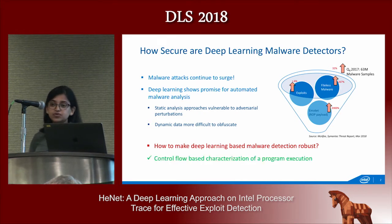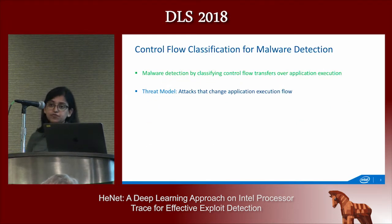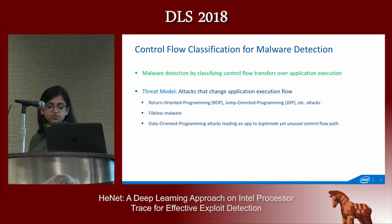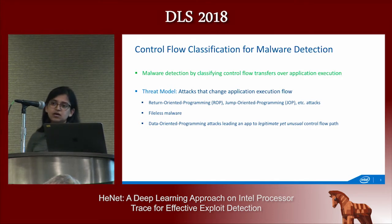In this work, we focus on characterizing a program execution based on fine-grained control flow traces. We consider malware detection as a control flow classification problem, and consider attacks that somehow manipulate the execution flow. This covers a wide range of attacks, including control flow attacks such as return-oriented programming attacks, file-less malware that run under the cover of a benign application, and data-oriented programming attacks that don't cause illegitimate control flow transfers but may make an application take an unusual control flow path.